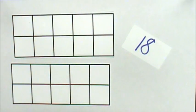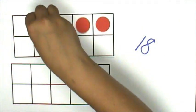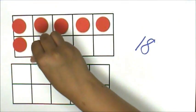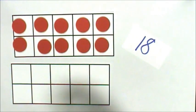Turn over a number card, it's eighteen, and represent that number on a double ten-frame. We don't have to count each counter because when the ten-frame is full, it equals ten.